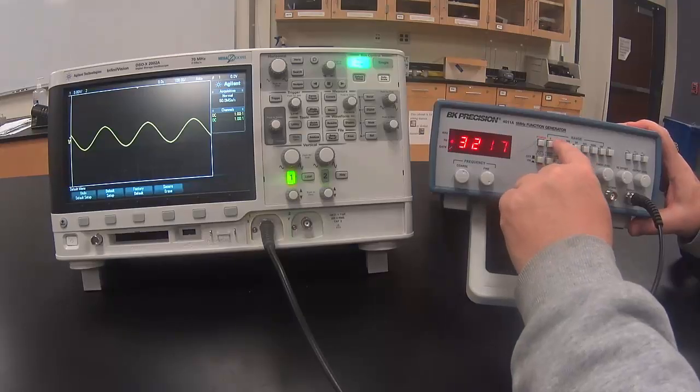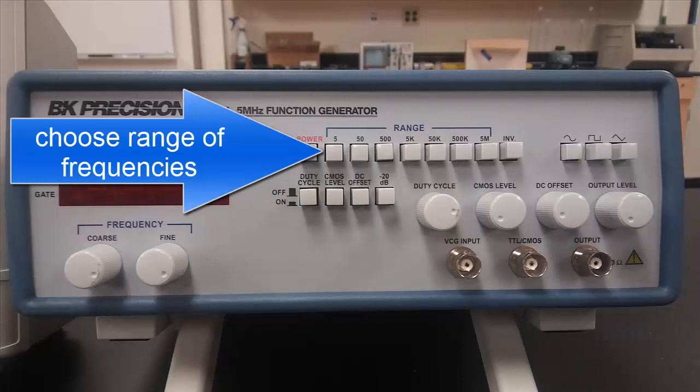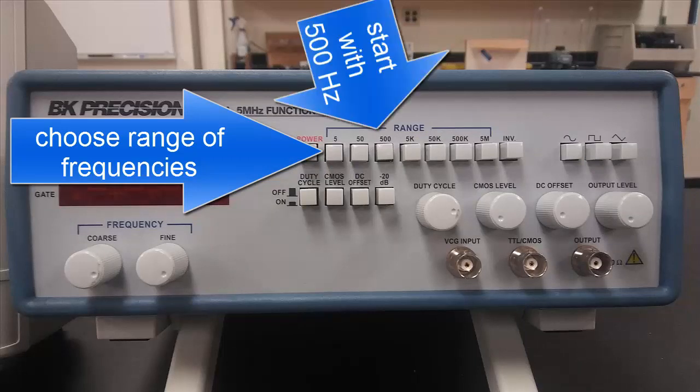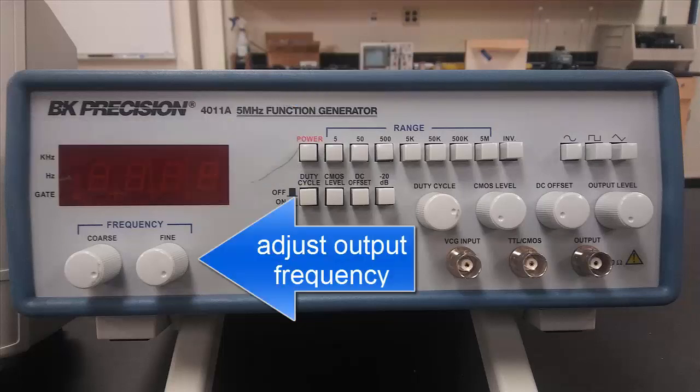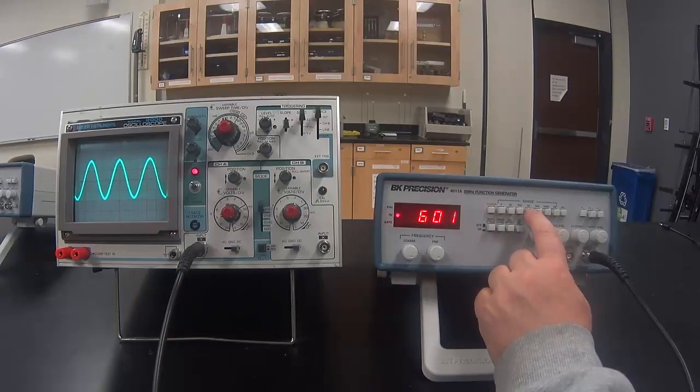This row of buttons at the top is what we use to select the range of frequencies that we want to work in. We are going to start with 500 Hz. Then we are going to use these knobs to adjust the exact output frequency that we want.